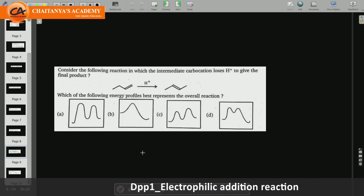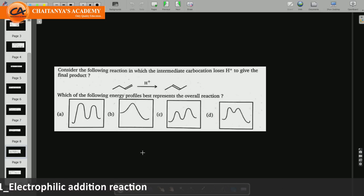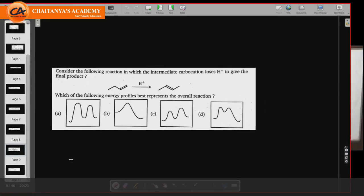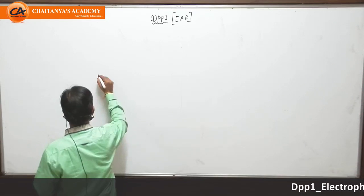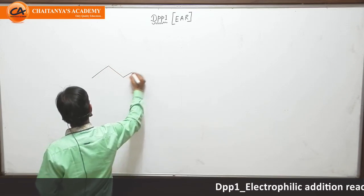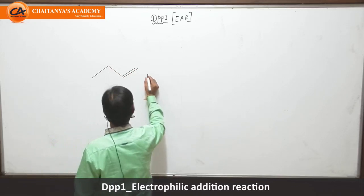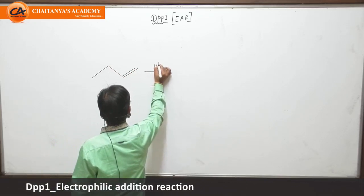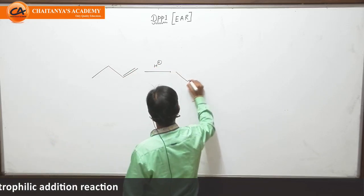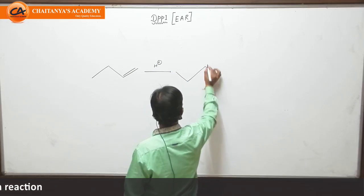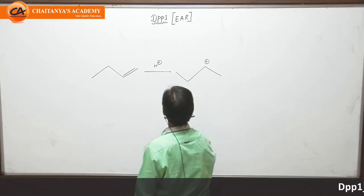Now students, in this case if you talk about the energy profile, first try to understand that in the very first case when H plus attacks on the alkene, it will generate a carbocation. This carbocation is generated.